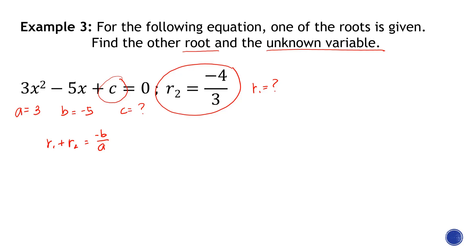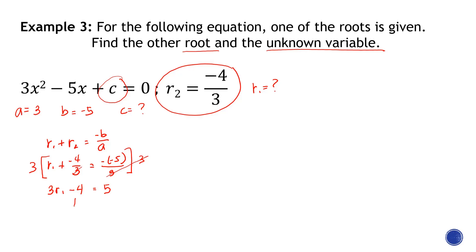Using the sum formula: r1 + r2 = −b/a, so r1 + (−4/3) = −(−5)/3. Since we have a fraction, we multiply all terms by 3: 3r1 − 4 = 5. Adding 4 on both sides gives 3r1 = 9, and dividing by 3 gives r1 = positive 3.